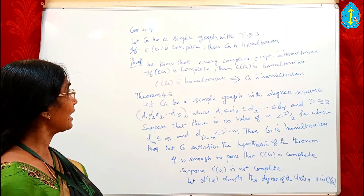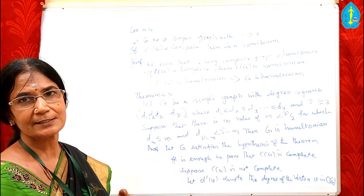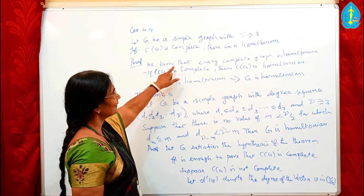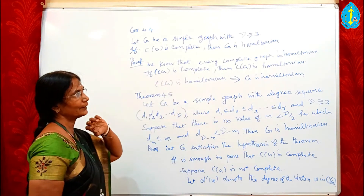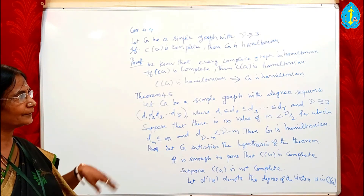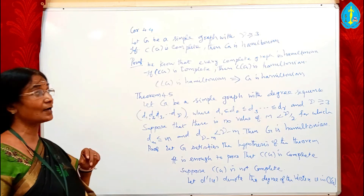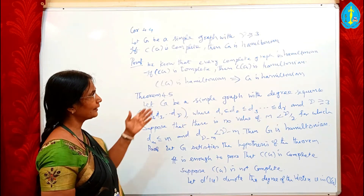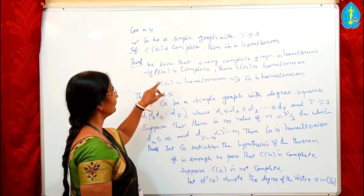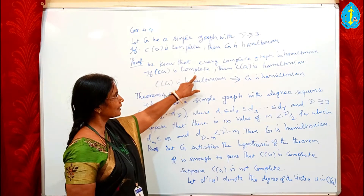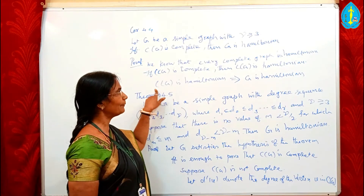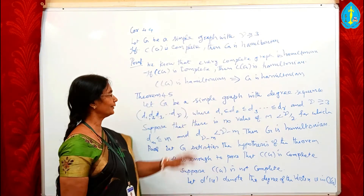From last class, G is Hamiltonian implies C(G) is Hamiltonian. If C(G) is complete, we know that every complete graph is Hamiltonian — that is, a Hamiltonian cycle of every complete graph contains all the vertices of G. Therefore, if C(G) is complete then C(G) is Hamiltonian, and C(G) Hamiltonian implies G is Hamiltonian.